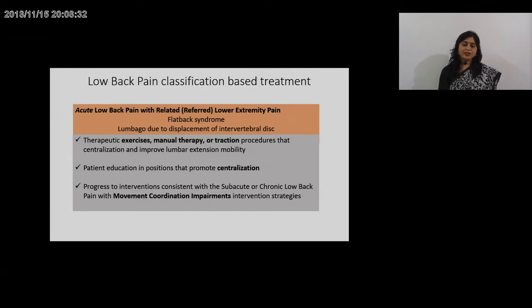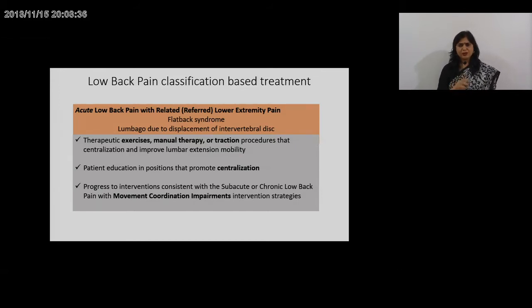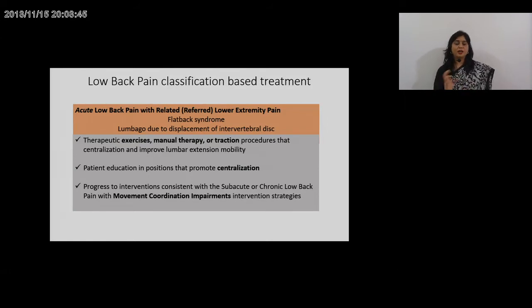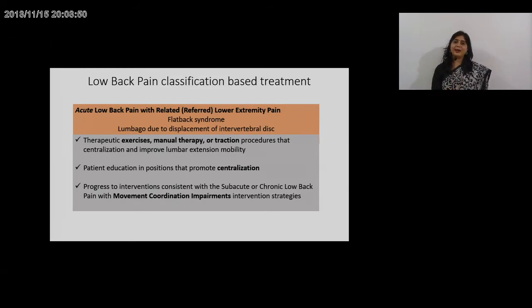Progress to interventions consistent with sub-acute and chronic low back pain management. In this particular category, the patient usually progresses into sub-acute and chronic categories, manifesting as movement coordination impairments. When this occurs, the same guidelines for movement coordination impairments can be applied.